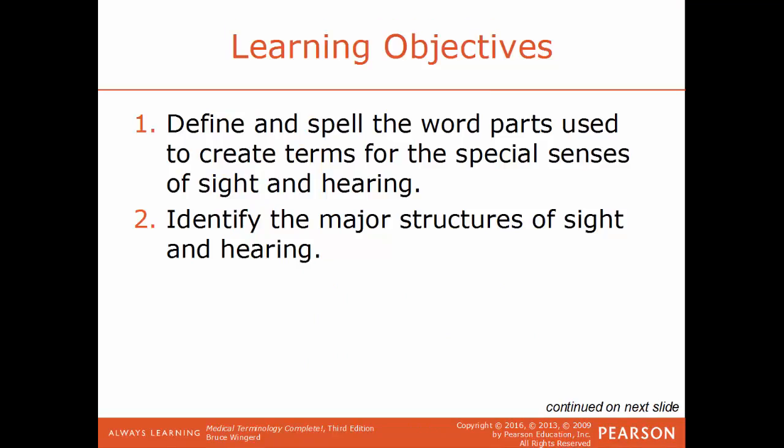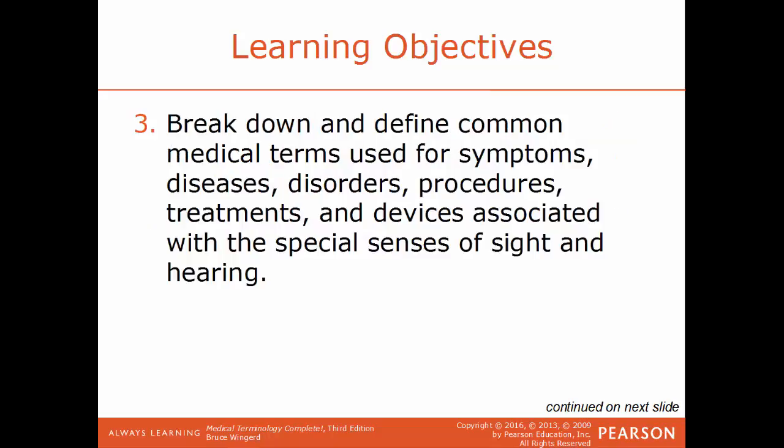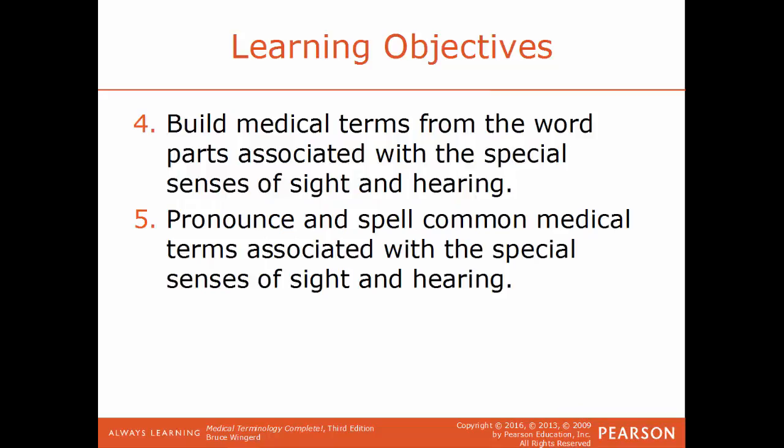Learning objectives for this chapter: Define and spell the word parts used to create terms for the special senses of sight and hearing. Identify the major structures of sight and hearing. Break down and define common medical terms used for symptoms, diseases, disorders, procedures, treatments, and devices associated with the special senses of sight and hearing. Build medical terms from the word parts associated with the special senses of sight and hearing. And lastly, pronounce and spell common medical terms associated with sight and hearing.